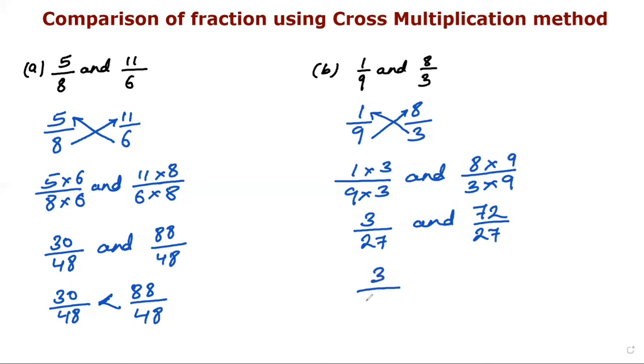So 3/27 is less than 72/27. This is how we compare fractions using cross multiplication.